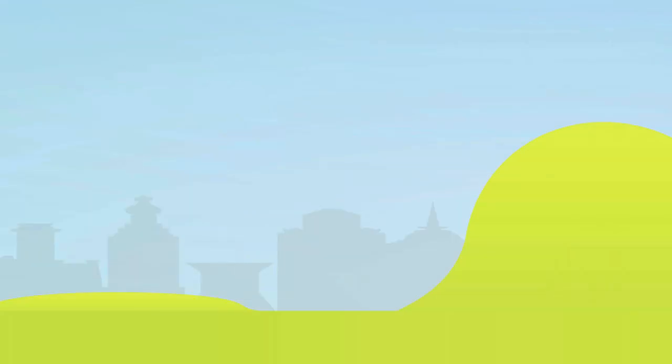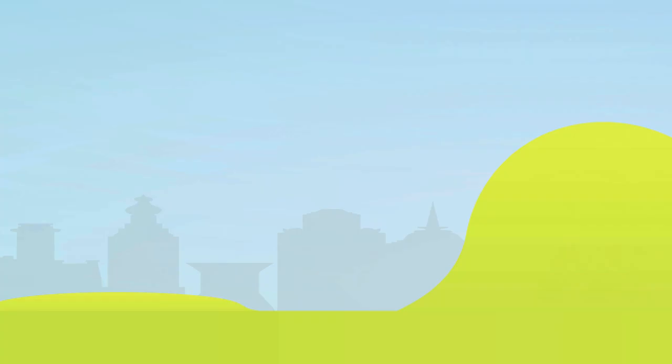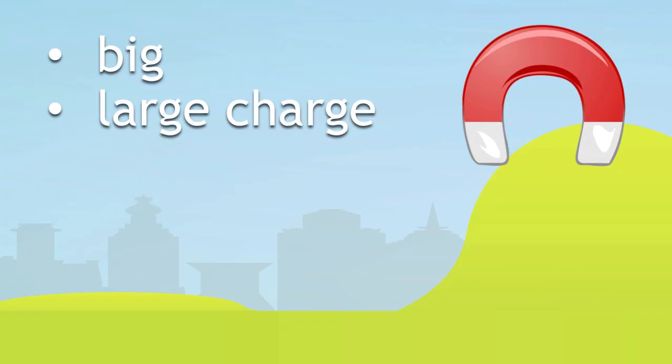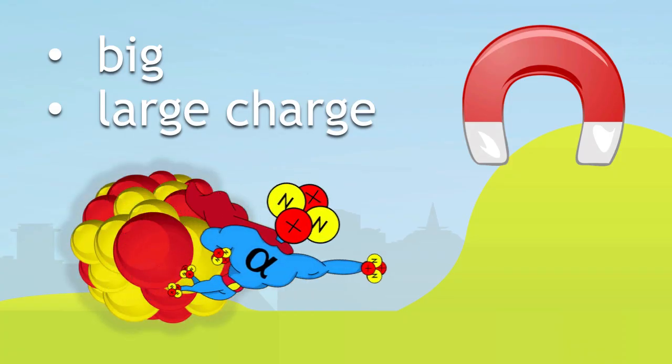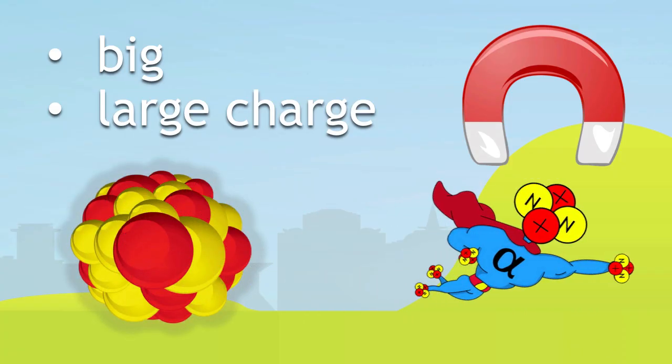You can use these properties to detect alpha radiation. Because it is big and has a large charge, you can make it move through an electric field. So here's your alpha particle coming out of the nucleus, and it's going through an electric field. As it goes through, it bends.